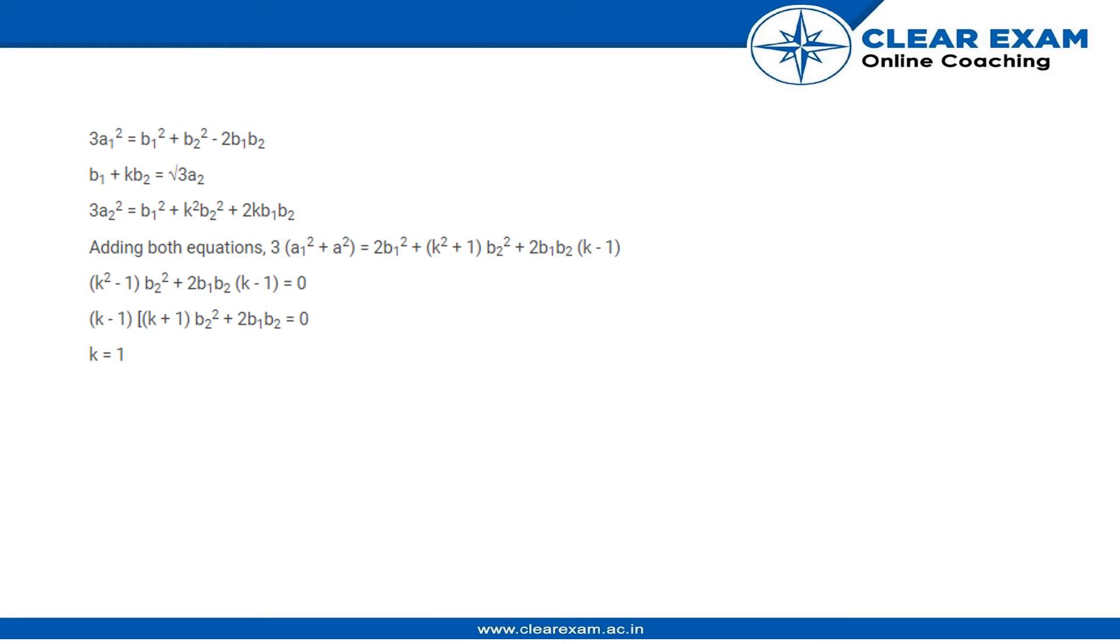Once we add these two equations, we get 3a1² + a2² equals 2b1² + (k² + 1)b2² + 2b1b2(k - 1). What we will do is use the relation that 3a1² + a2² equals 2 times (b1² + b2²).